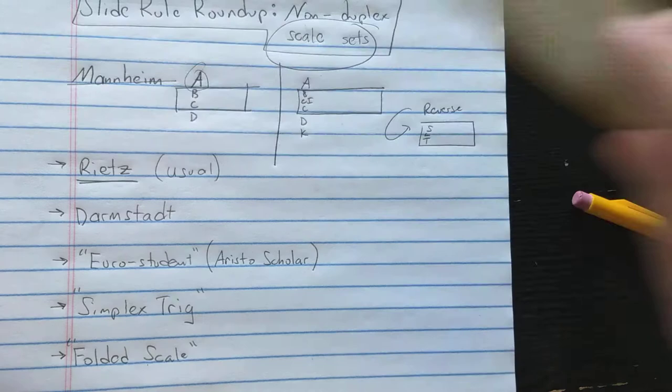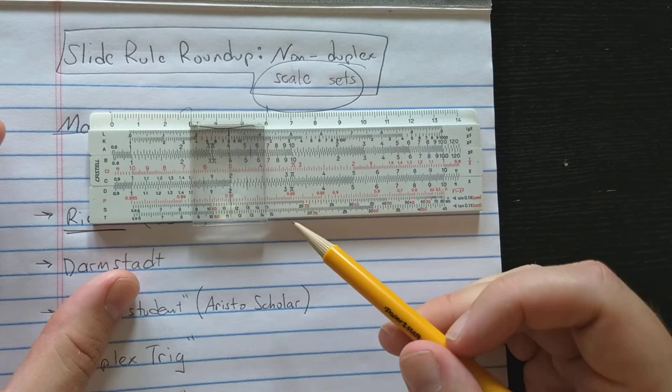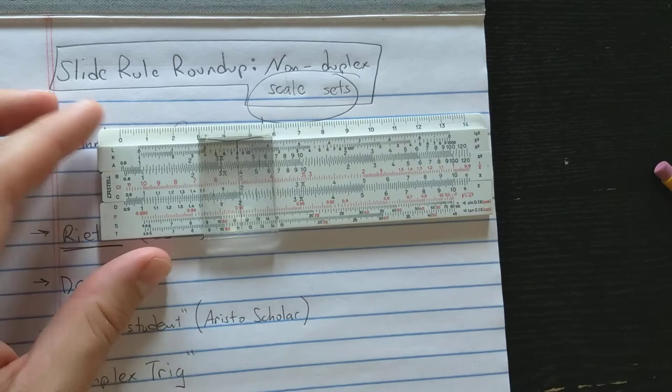Moving on up in complexity, we have the Darmstadt layout. The theory is that KNE had some sort of patent on duplex, something about duplex slide rules. So some European manufacturers tried to get a more complicated slide rule, especially one having log-log scales.